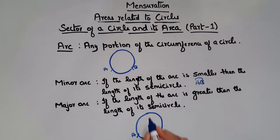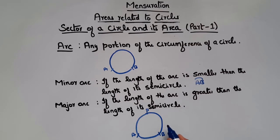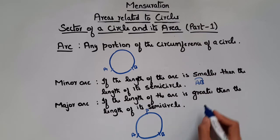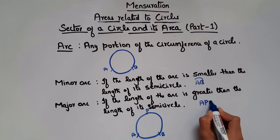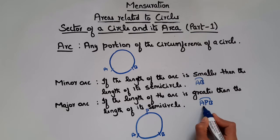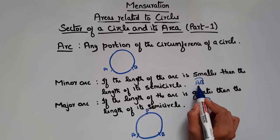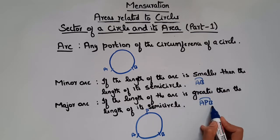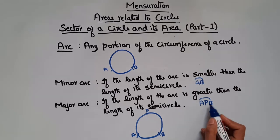The representation of minor arc is arc AB — written with two letters. Now if you see arc APB, the length of this arc is greater than the length of its semicircle, so arc APB is a major arc, represented with three letters APB. Whenever you see two letters it is a minor arc, and if you see three letters it is a major arc.